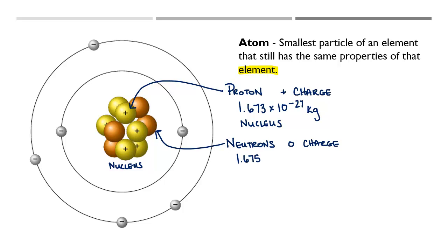So neutrons have no charge, hence the word neutral. Neutron, they are neutrally charged. They have a mass of 1.675 times 10 to the negative 27th kilograms. So just a little bit bigger than a proton.